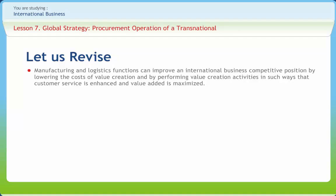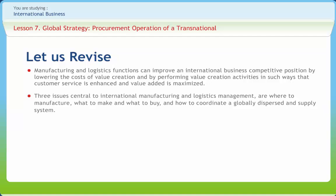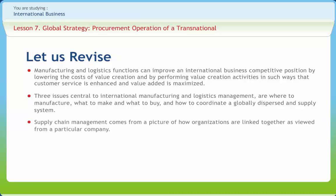Before we end, let us briefly revise what we have studied. The lesson explained how efficient manufacturing and logistics functions can improve an international business's competitive position by lowering the cost of value creation and by performing value creation activities in such ways that customer service is enhanced and value added is maximized. We also examined three issues central to international manufacturing and logistics management: where to manufacture, what to make and what to buy, and how to coordinate a globally dispersed supply system. Supply chain management is important in business today, and the goal of a supply chain should be to maximize overall supply chain profitability. Key supply chain decision phases are supply chain strategy or design, supply chain planning, and supply chain operations.